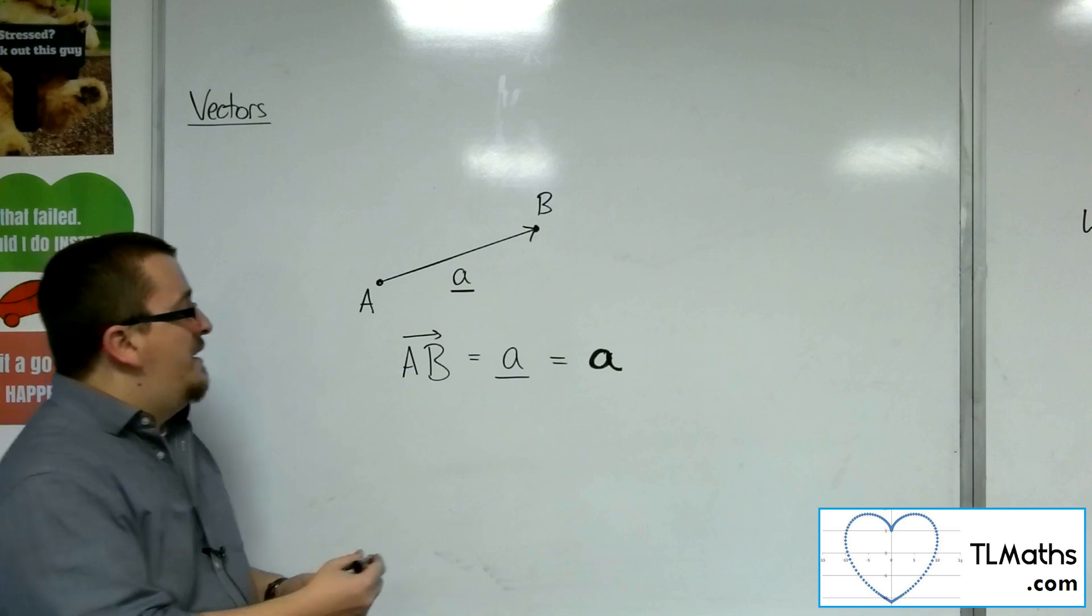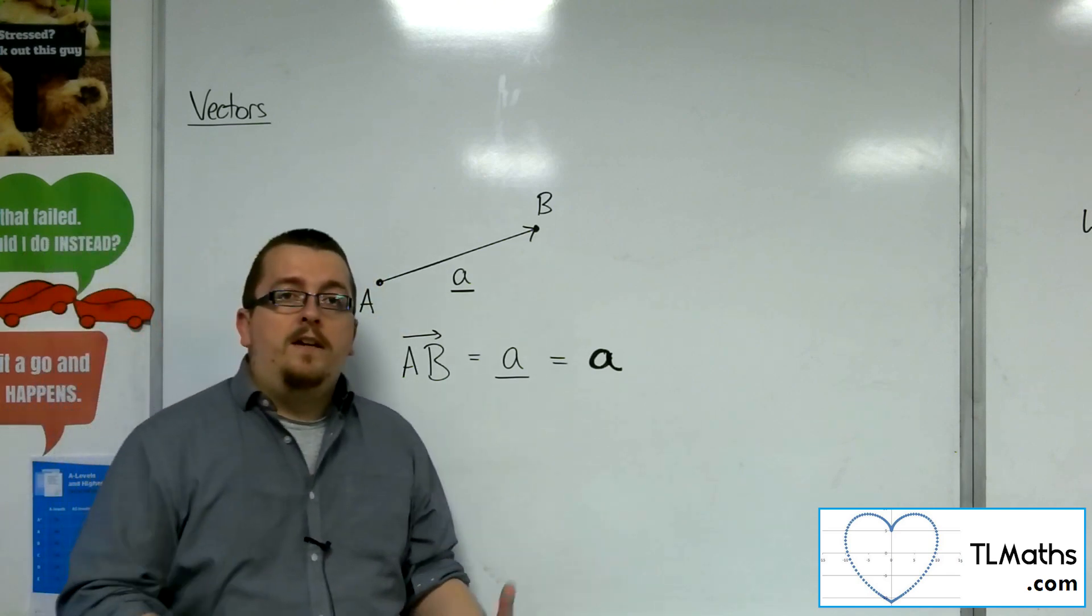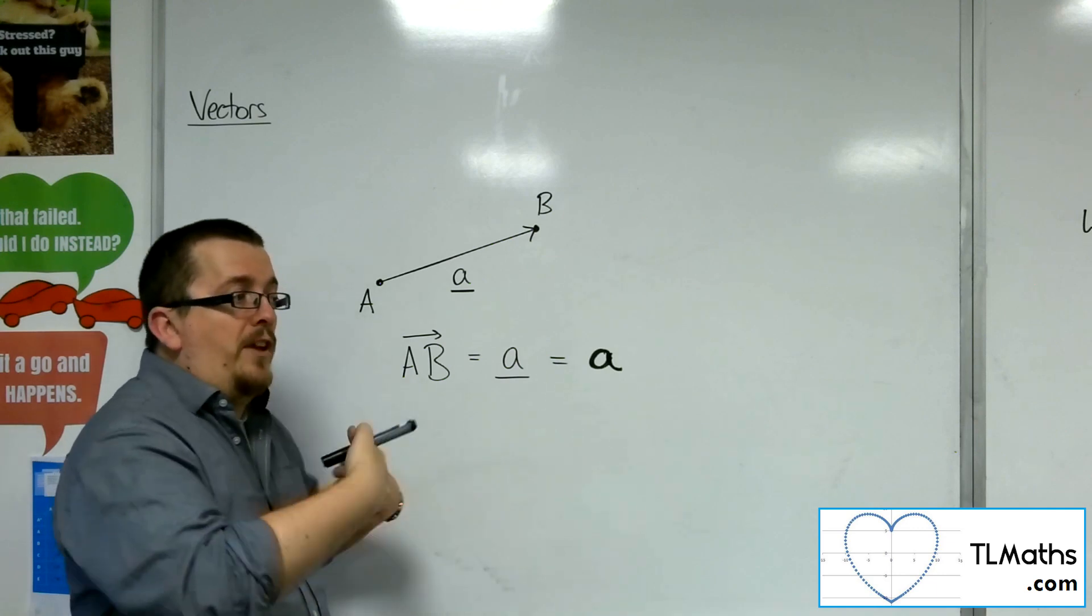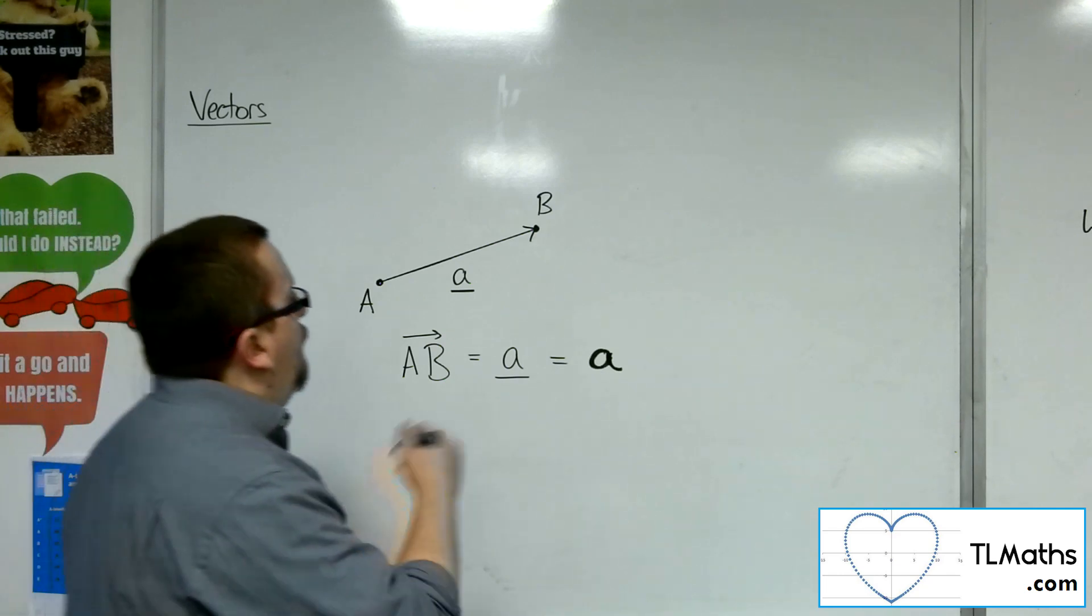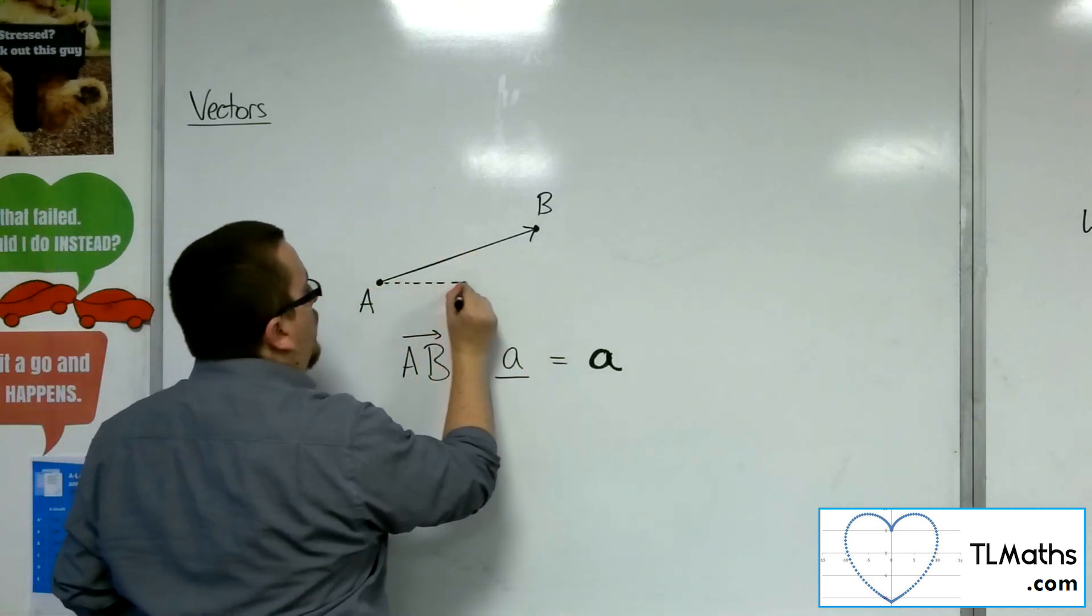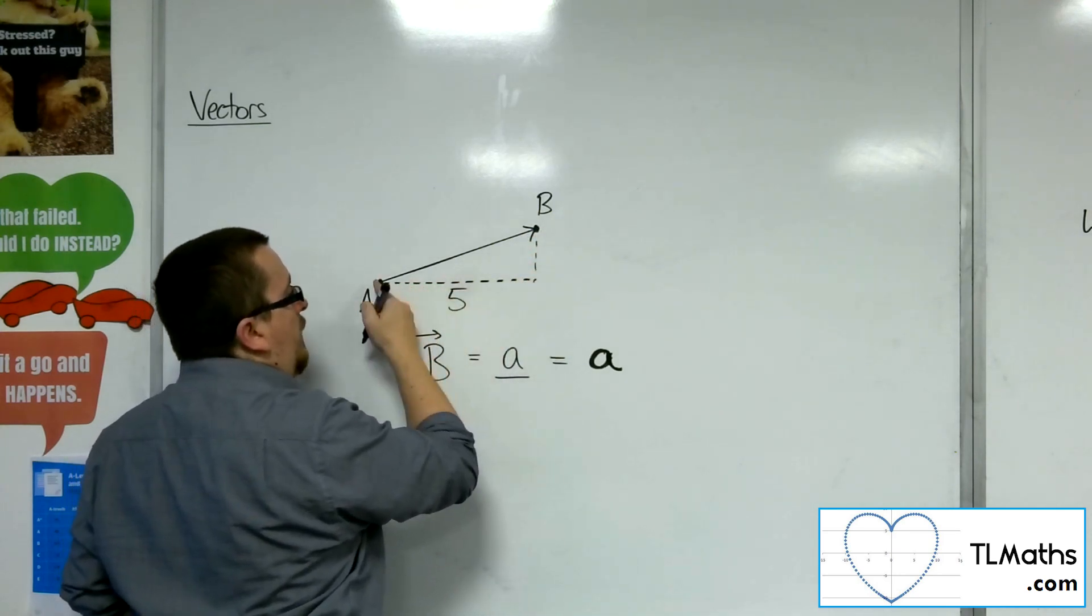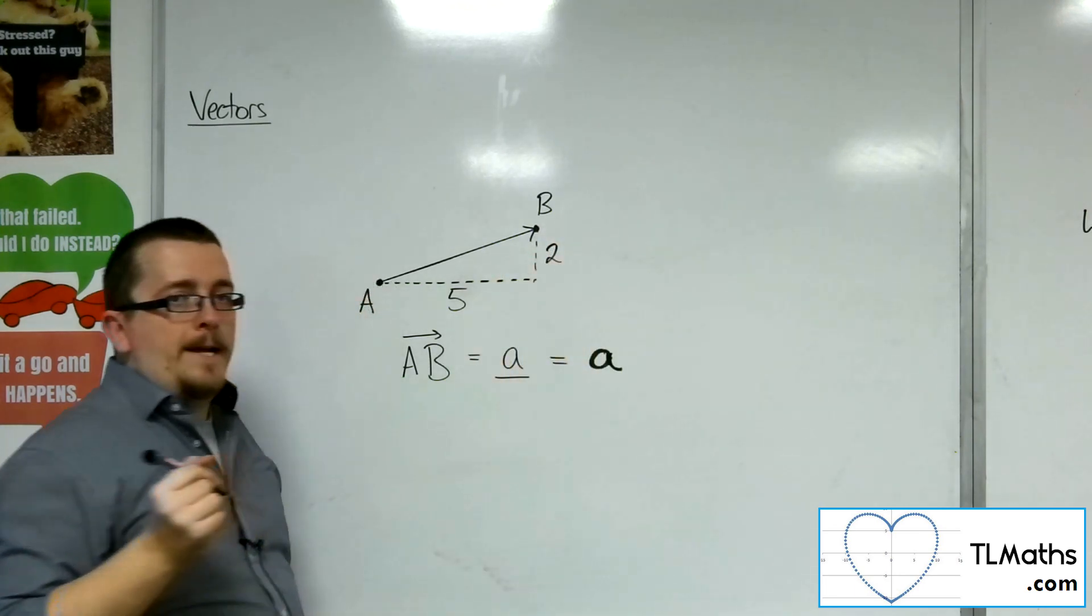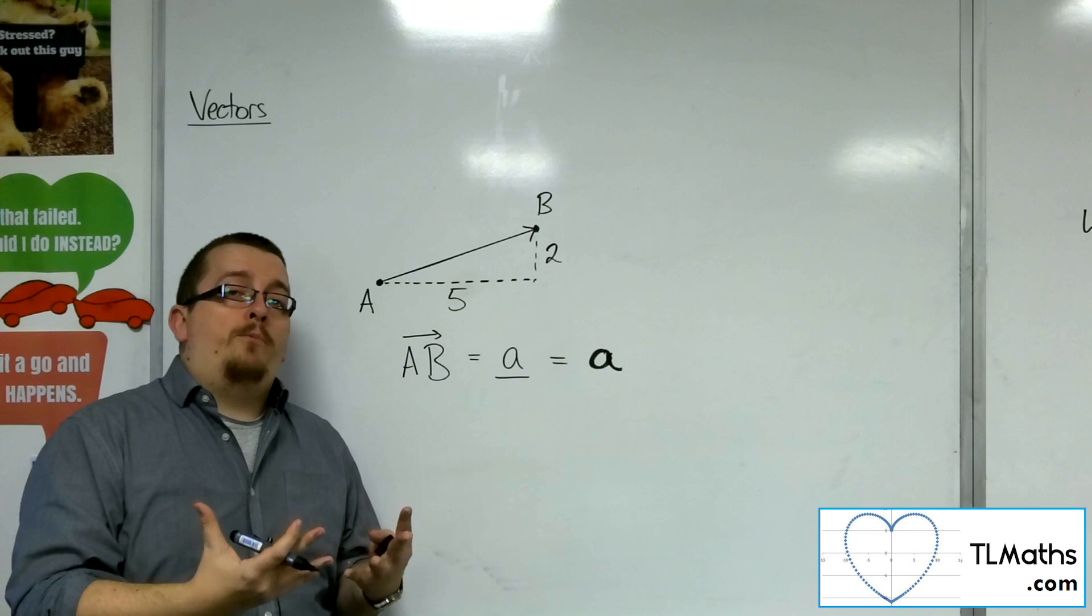Now, we don't just represent vectors just by letters like that. We can identify them by their actual kind of size going in one direction and another. So for example, if this vector was travelling, let's say, 5 along and then 2 up.